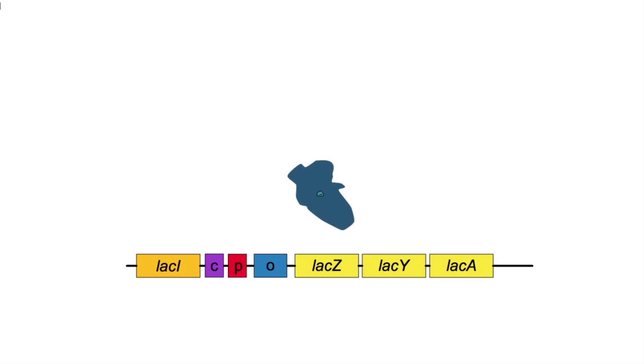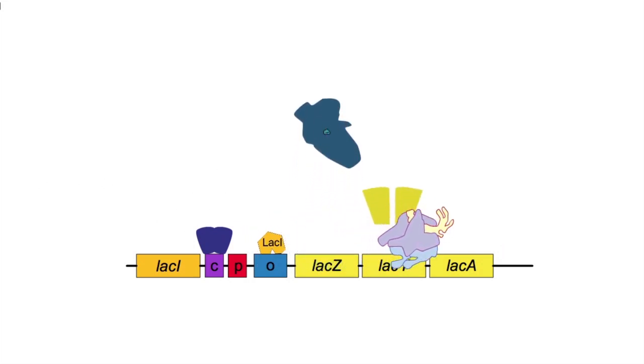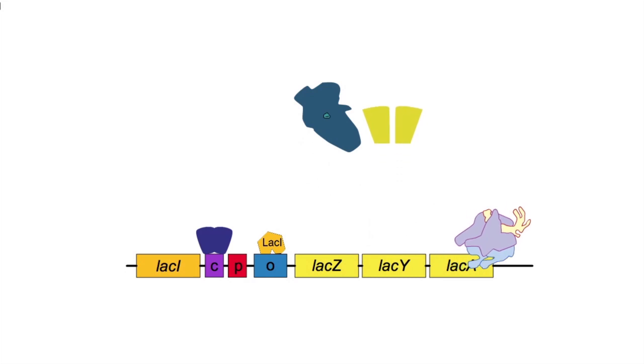Well, the answer is, no operon is completely on or off. The repressor does not bind 100% of the time to the operon. So there is always a little expression from the operon, even when it is off. Therefore, there is a little bit of lactose permease to get lactose into the cell, and there is a little bit of beta-gal around to convert the lactose into allolactose.